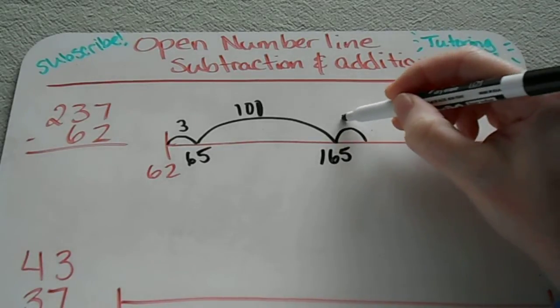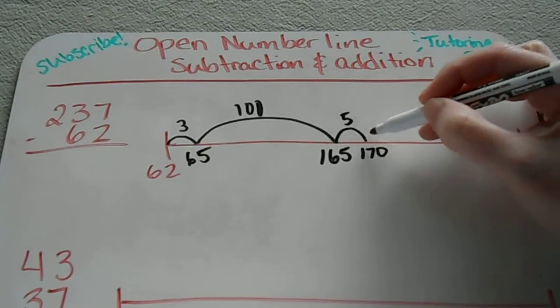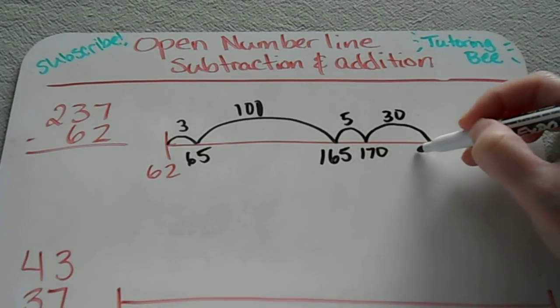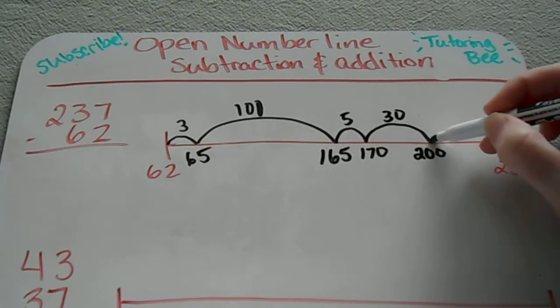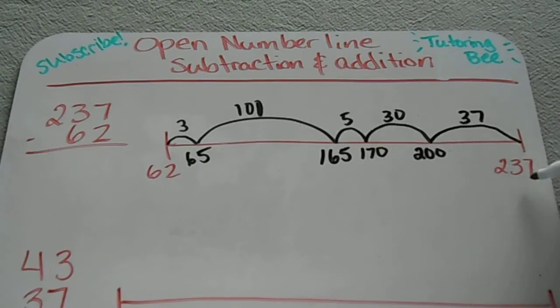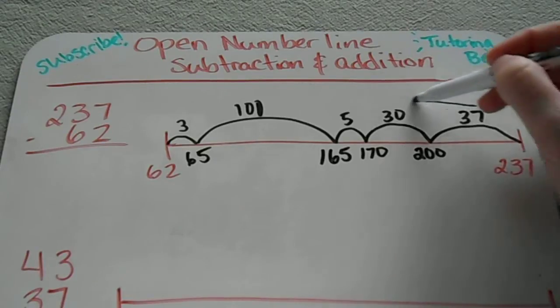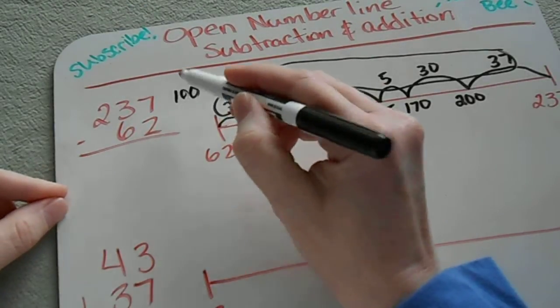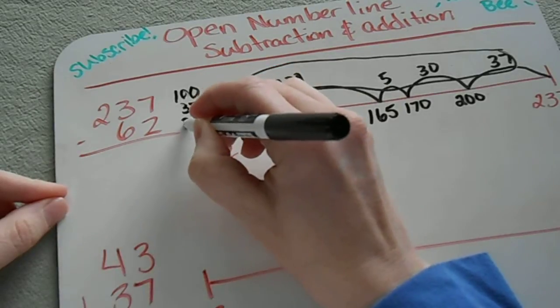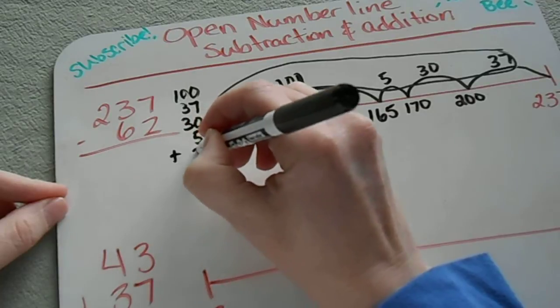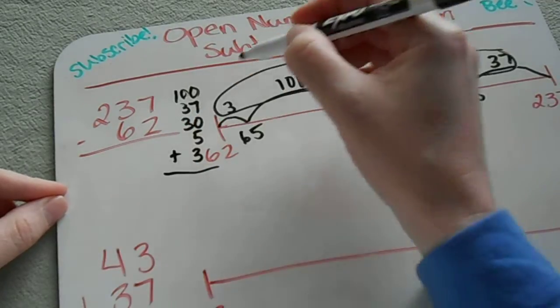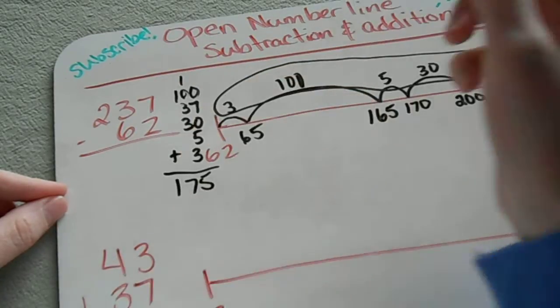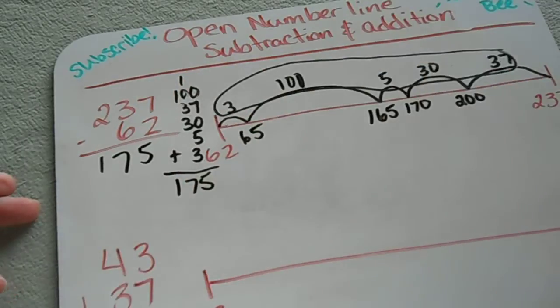And then I know that I need to make a few more jumps to get to 237. So I'm going to make another jump of 5 to get to 170, and then I know that 30 more units will take me to 200, and then I can easily see that 37 more jumps will take me to 237. These are numbers that I just picked out of my head because I knew that I can make small jumps to eventually get to 237, and I'm going to add those jumps up at the top. So I have 100 plus 37 plus 30 plus 5 plus 3. I'm just going to add all of those up to get 175. So that would be my difference is 175.